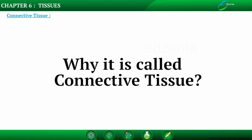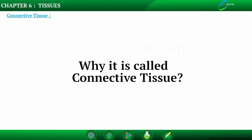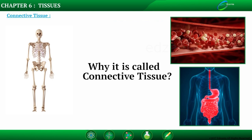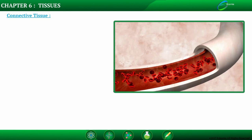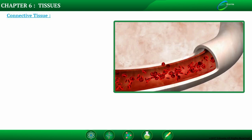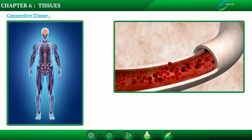Connective tissue supports, connects, or separates different types of tissues and organs in the body. The cells are loosely packed with intercellular spaces and are embedded in an intercellular matrix, which may be jelly-like, fluid, or dense. Blood is one type of connective tissue because it connects body systems, bringing needed oxygen, nutrients, and hormones and removing waste.